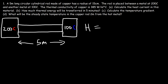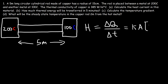The heat current, represented by the symbol H, is the rate at which heat energy is transferred — the change in Q divided by the change in time — representing how fast thermal energy is being transferred. It equals the thermal conductivity constant times the area of the circular rod multiplied by the temperature difference (hot minus cold, in Celsius or Kelvin), divided by the length of the rod.